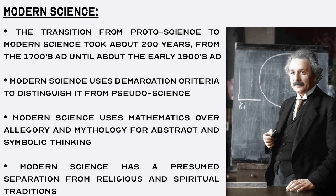Modern science. The transition from proto-science to modern science took about 200 years, from the 1700s with the Age of Enlightenment, or Age of Reason, until about the early 1900s, where demarcation criteria between science and non-science, or science and pseudoscience, were clearly established. While Africa, the Middle East, and the Eastern world were the main drivers during the development of proto-science, the transition from proto-science to modern science was spearheaded by the Western world — i.e., Europe and its colonies. Another characteristic of modern science is the use of mathematics over allegory and mythology as the best mental tool for abstract and symbolic thinking.